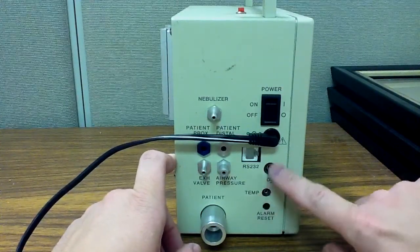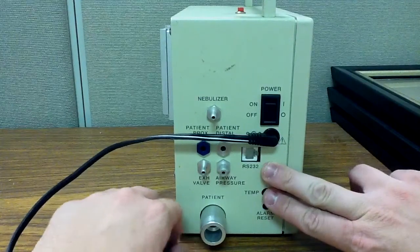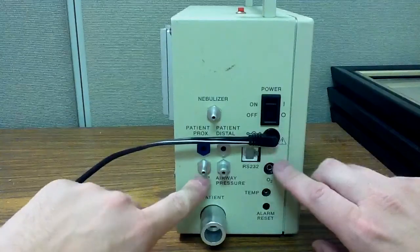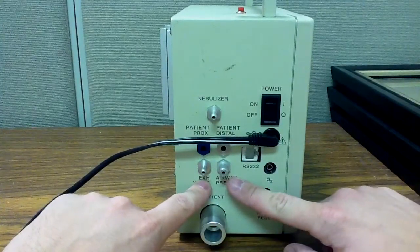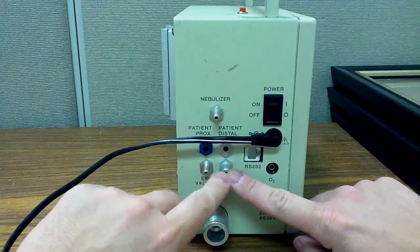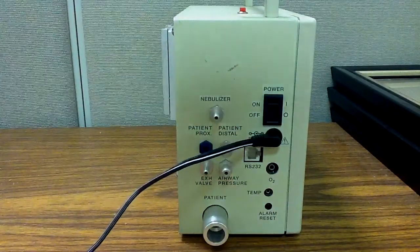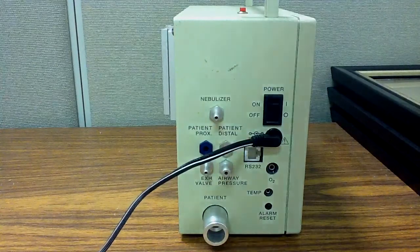There is a temperature probe here, an O2 probe. We generally did not use these, however. This is your exhalation valve and your airway pressure. So these are your transducing lines that should be attached to the ventilator circuit. I'll show you an example of those on the ventilator circuit here.